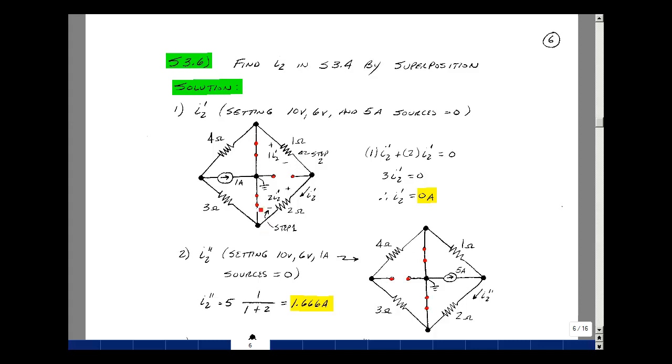So I go around a loop here, the rise is equal to drop, I have no rise, and the drop is I2 prime times 1 plus 2 times I2 prime. But that has to equal zero. And that means that I2 prime is zero.